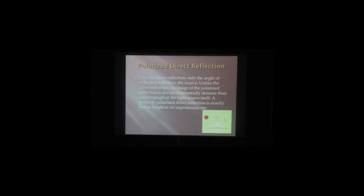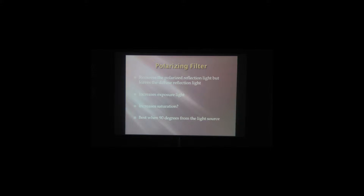Does that make sense? Direct reflection was the same brightness — distance didn't change anything. But a polarized reflection is going to be a lot dimmer than the light source itself, which makes sense when you walk through those trees that are reflecting that back — you don't get blinded. A polarizing filter removes the polarized reflection light but leaves the diffuse reflected light. The diffuse light that's lighting the leaves, you're still going to see that. It just cuts out the photons that are parallel.